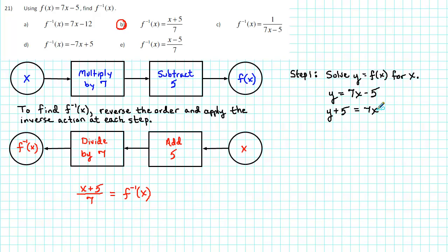Finally, to solve for x, we need to divide both sides by 7. We get x is equal to y plus 5 over 7.